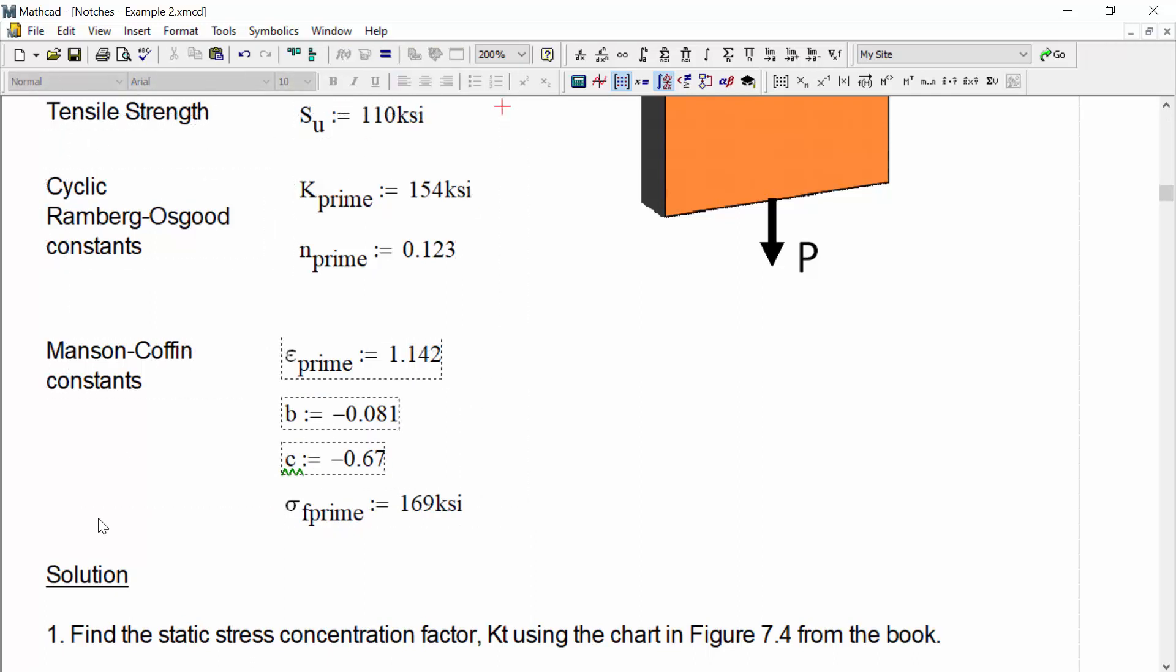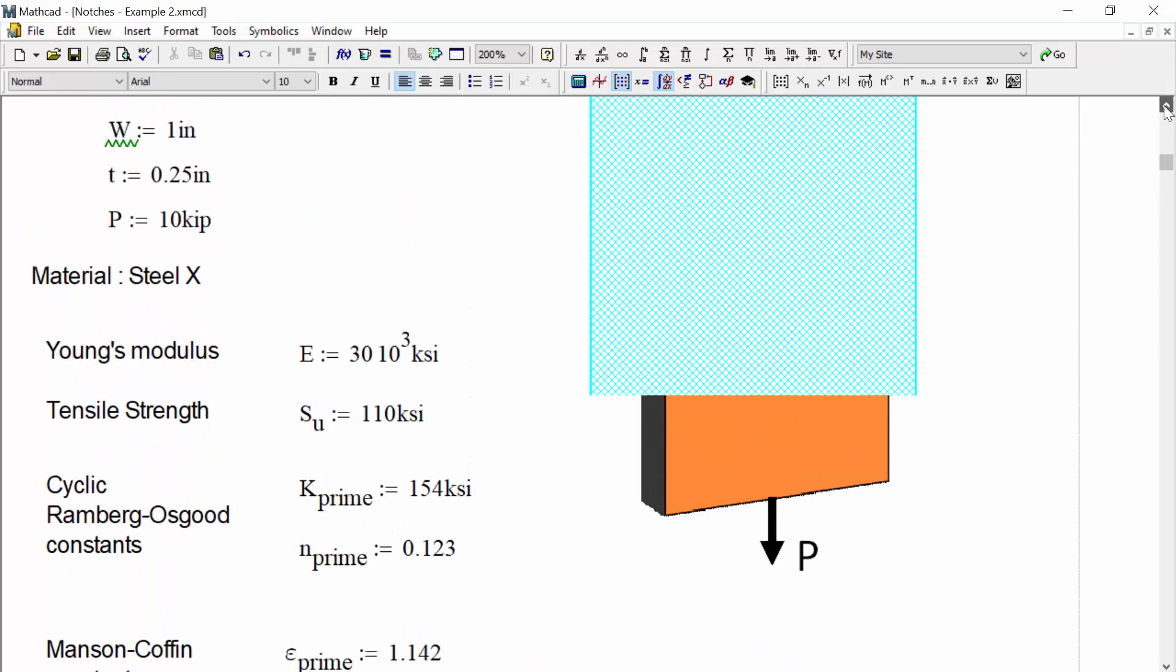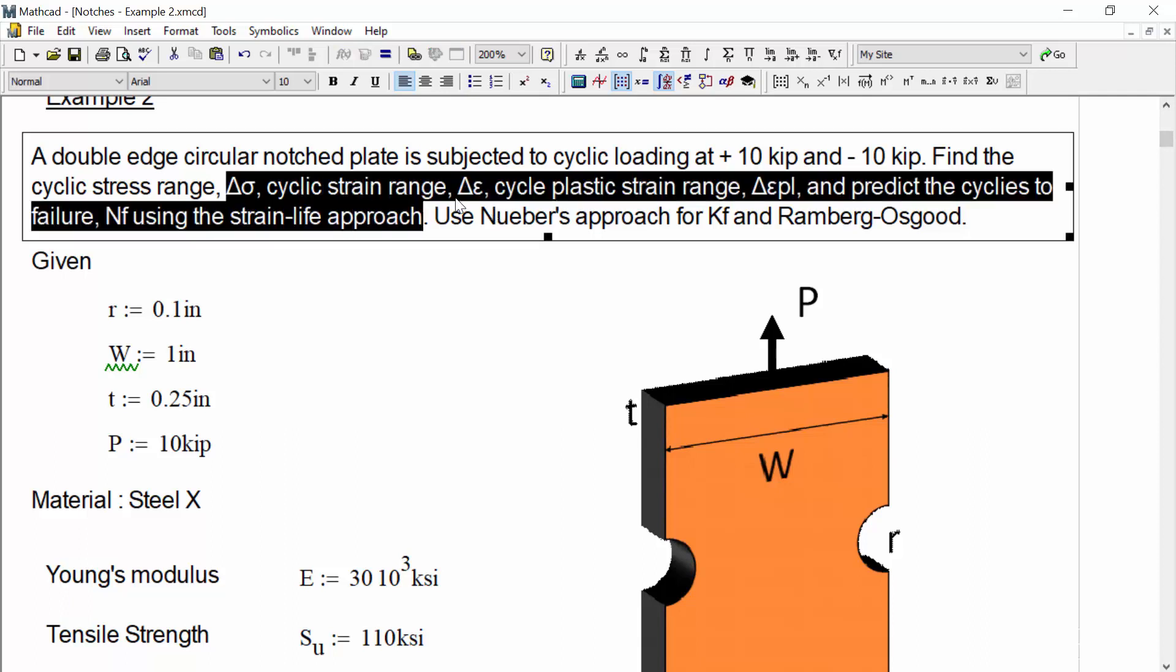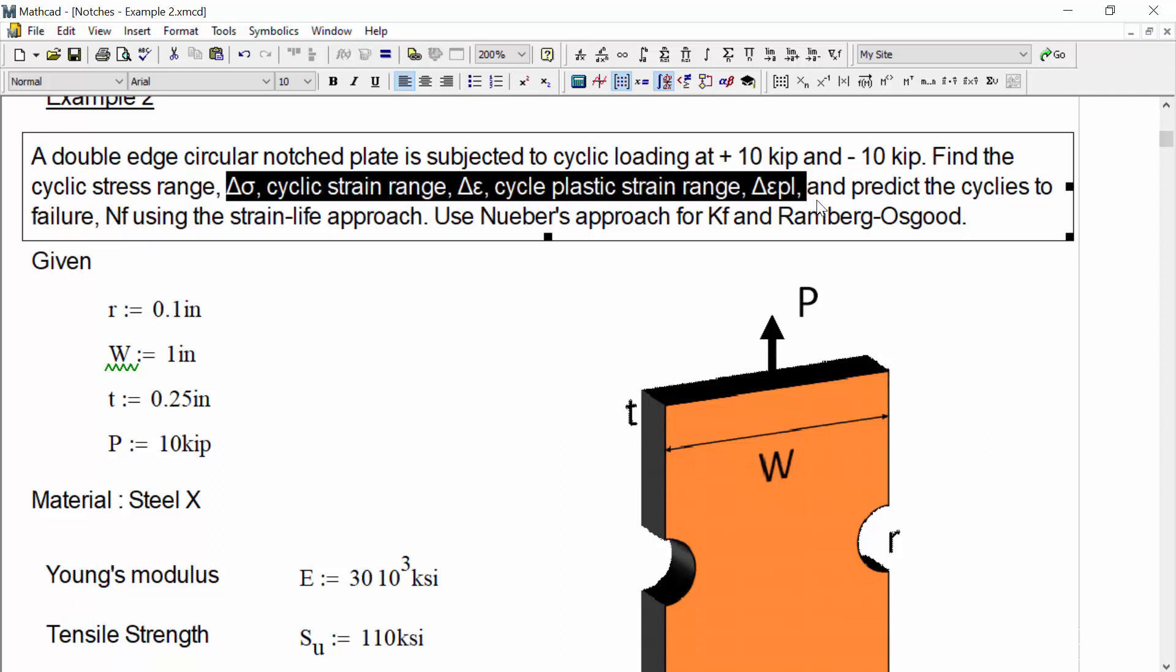Typically we would be given the material name and then we would go into the textbook and look up these material properties from the tables. But here we are given them directly. So again, this problem wants us to do a couple of things. It wants us to find basically the hysteresis loop properties of this material and predict cycles to failure.